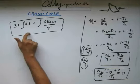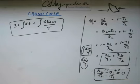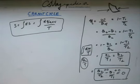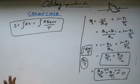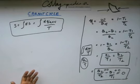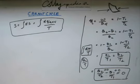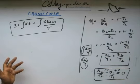This is the Carnot cycle — it's a special cycle that involves all reversible processes. At the beginning of the chapter, I told you that all practical processes we see in practice are irreversible. There is no process that is reversible because reversible processes are quasi-static; they take infinite time to complete, and the processes we deal with take finite time. So all practical processes are irreversible.